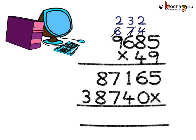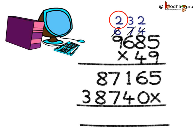Next, we multiply by 4 — that is 9,685 multiplied by 4. Since 4 is at the tens place, we put a cross. 4 fives are 20 — put 0 and 2 is the carry forward. 4 eights are 32 plus 2 carry over, so 34 — write 4 and 3 is the carry forward. 4 sixes are 24 plus carry over 3, so 27 — write 7 and 2 is the carry forward. Lastly, 4 nines are 36 plus carry over 2, we get 38.